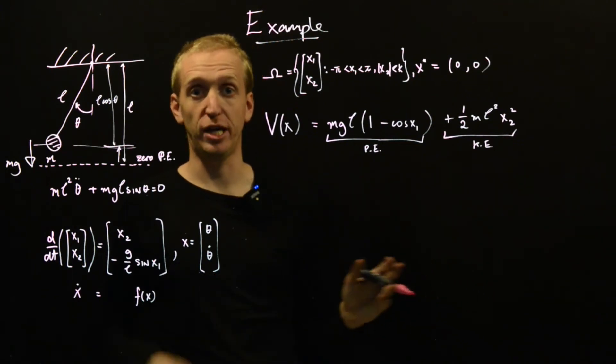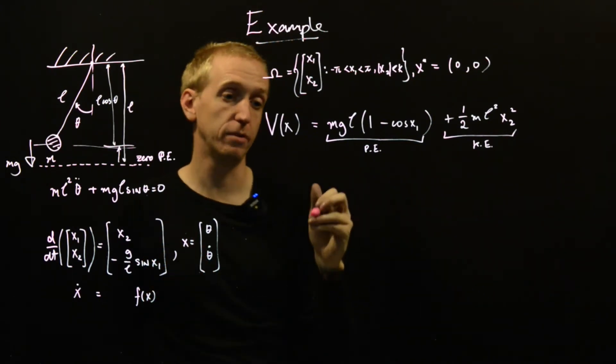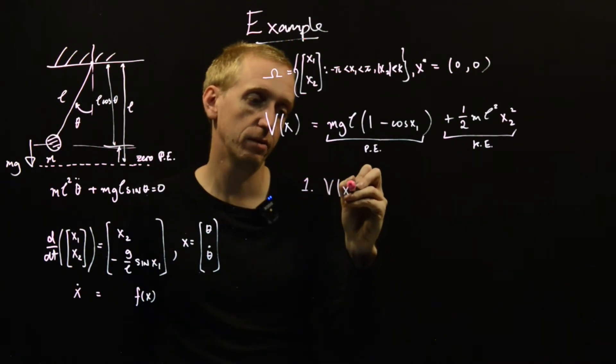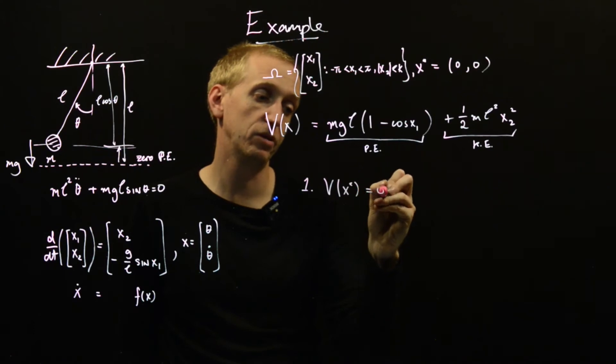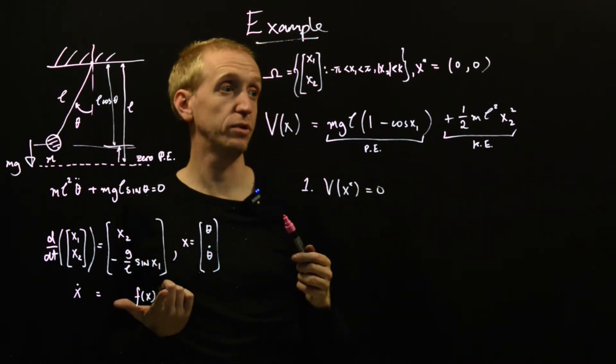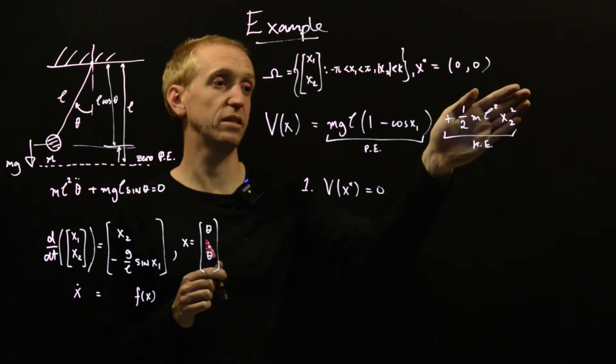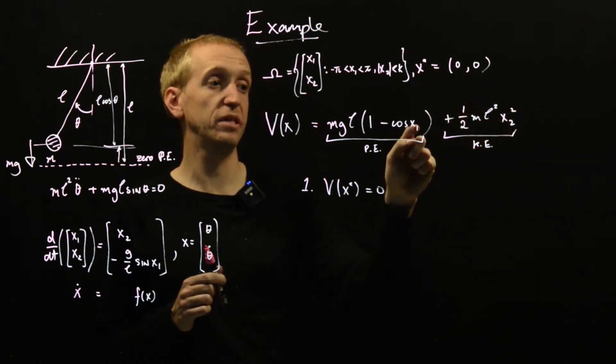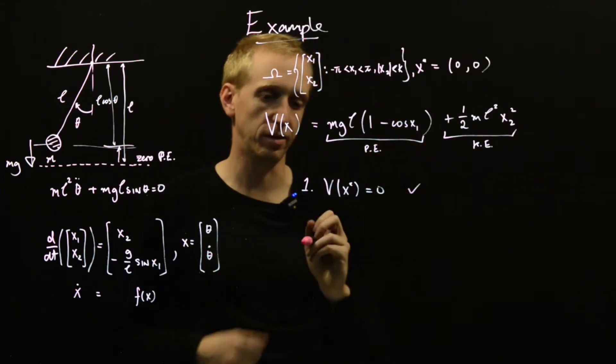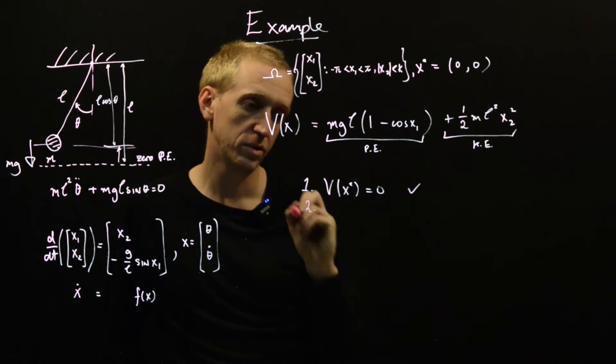How do we go about checking the various bits and pieces? Well, the first thing we needed to check was that V of x star is equal to 0. So say x1 is equal to 0, x2 is equal to 0, x2 is equal to 0, that term is 0. x1 is equal to 0, cos of x1 is equal to 1. So check.